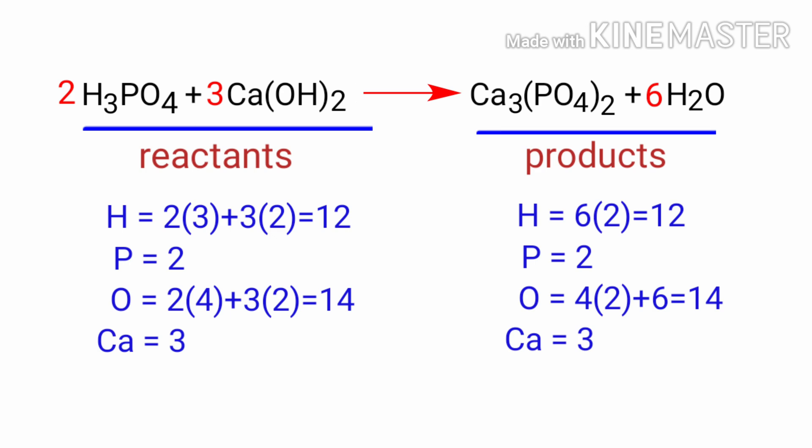There are 12 hydrogen atoms, 2 phosphorus atoms, 14 oxygen atoms and 3 calcium atoms on both sides.